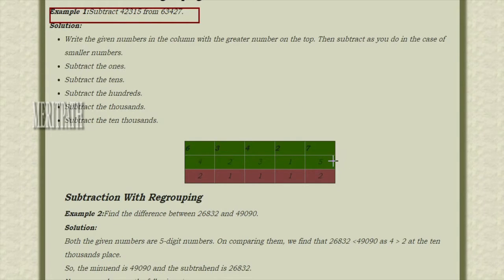Let us take these numbers and insert in place value chart. First number is 42,315. Second number is 63,427. So the greatest number is 63,427. We need to write on the top. Below the number, let us write this second number, 42,315.